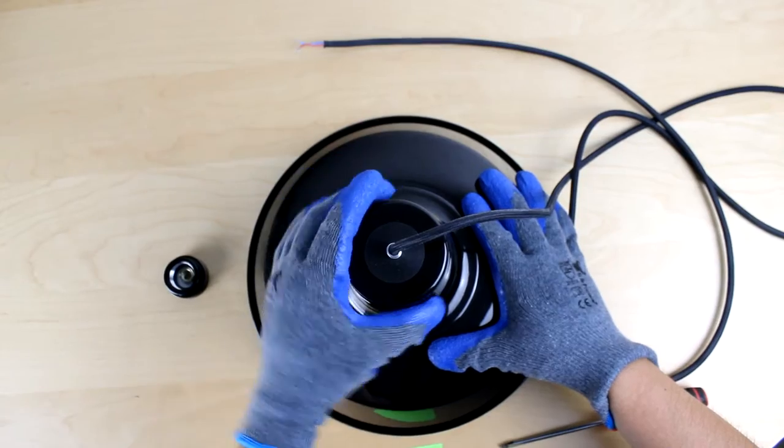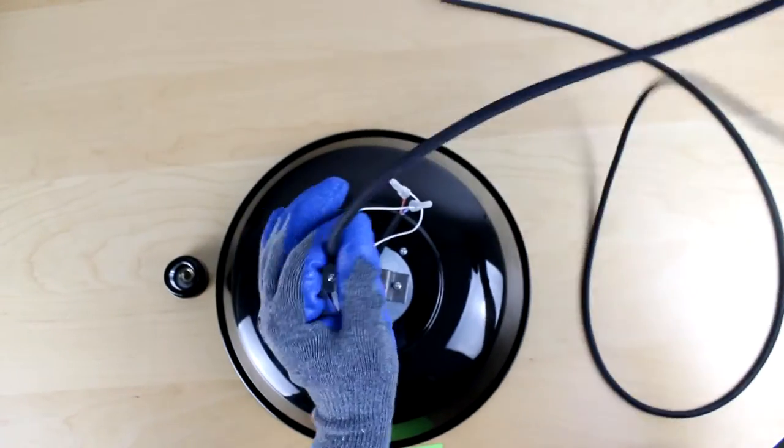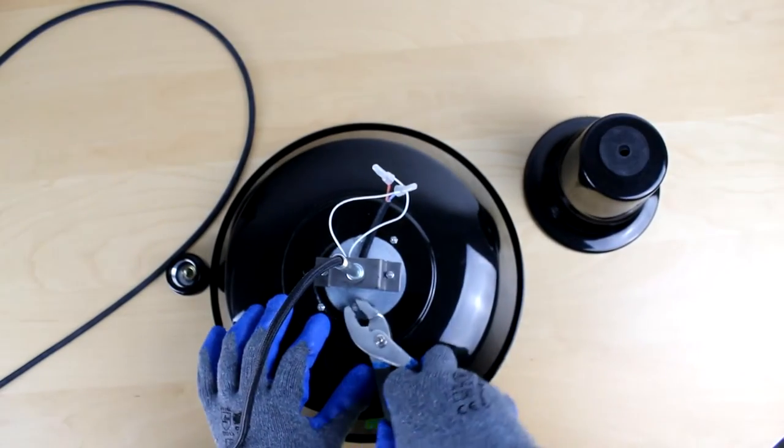The lid will come straight off by pulling up gently. Next, we need pliers to take the four inner nuts off.